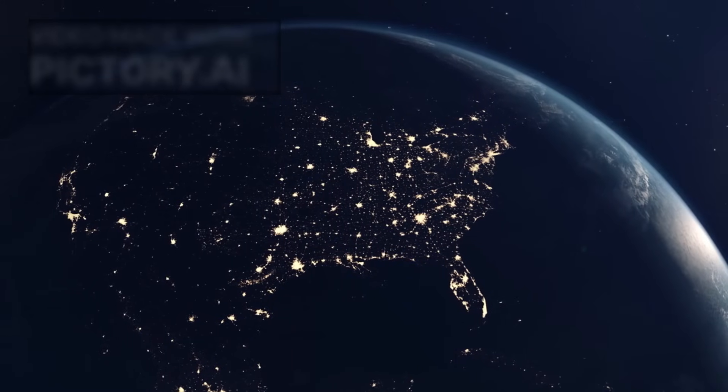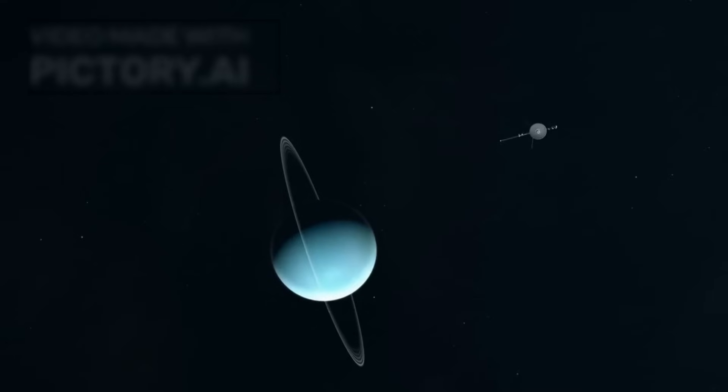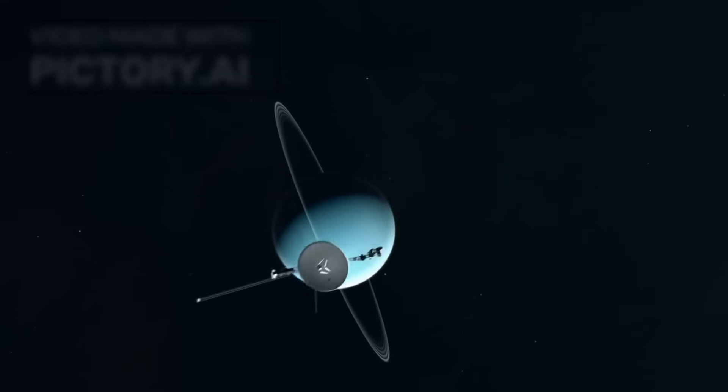But not everything has gone smoothly. Over time, each spacecraft has experienced glitches, system failures, and wear. Their power sources are slowly running out. Voyager 1, in particular, caused concern when it began transmitting garbled data in 2022.